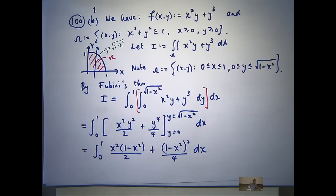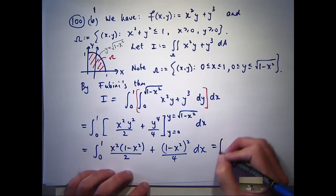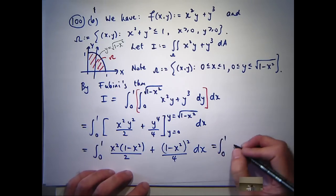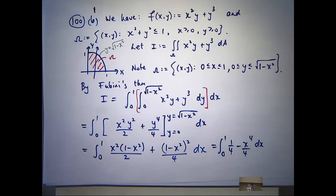So all I need to do now is expand the brackets and simplify it in some way, and all I've got now is a single integral. So according to my calcs, after the simplification, you'll get something like this: 1 quarter minus x to the 4th on 4, dx. And if you integrate that, you'll get 1 fifth.